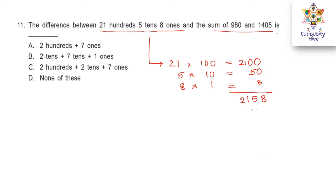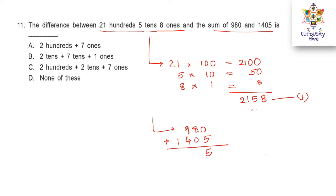This is our number 1. Our number 2 is the sum of 980 and 1405. So 980 plus 1405: 0 plus 5 is 5, 8 plus 0 is 8, 9 plus 4 is 13 — 3 carry 1, and 1 plus 1 is 2. So our second number is 2385. Now we need to find the difference between the two.